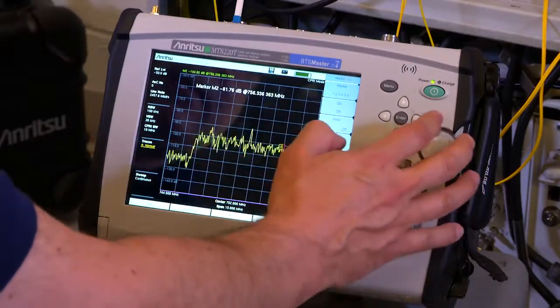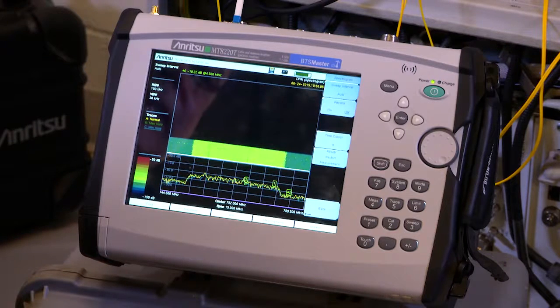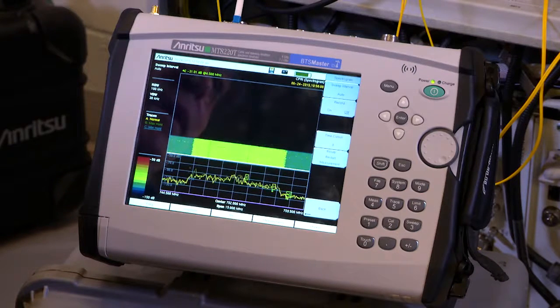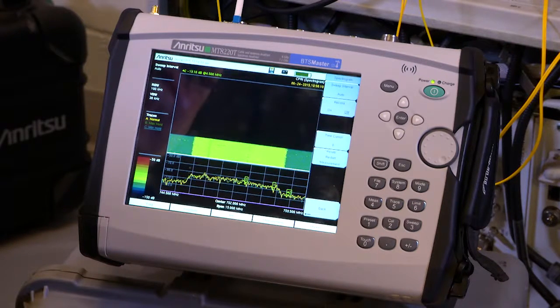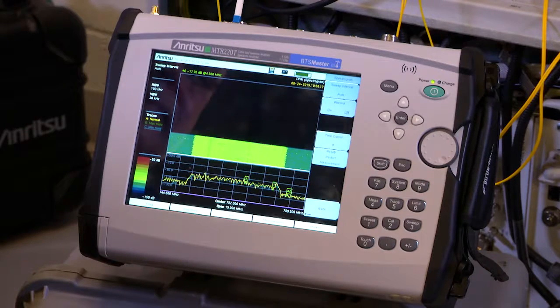For longer term monitoring, a spectrogram is also provided which displays the spectral power density over time. This is critical to detect intermittent interfering sources.